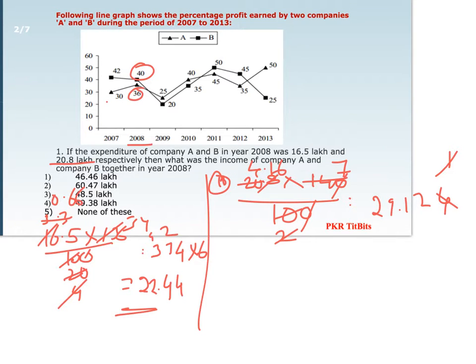We have to total these two values: 22.44 + 29.12 = 51.56 lakhs. So the answer is option 1.